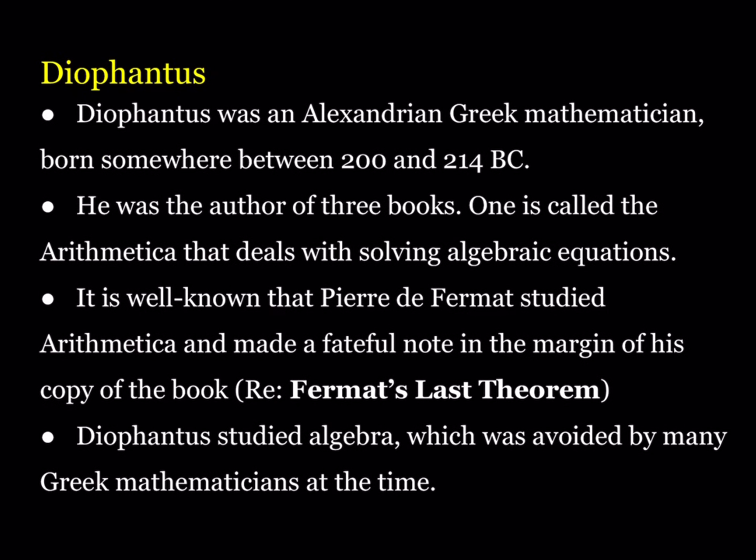Diophantus was a Greek mathematician. He wrote three books, one of them called Arithmetica. Fermat studied his book and wrote in the margin that famous Fermat's Last Theorem, which was proven by Andrew Wiles recently — a very interesting equation.